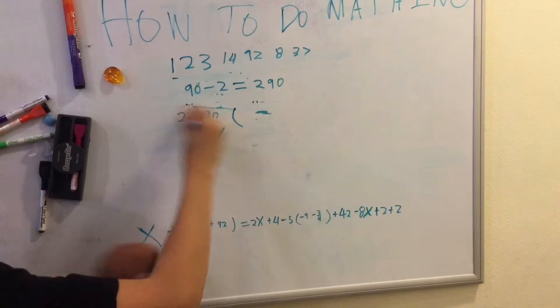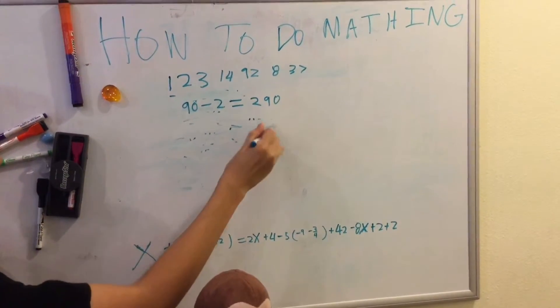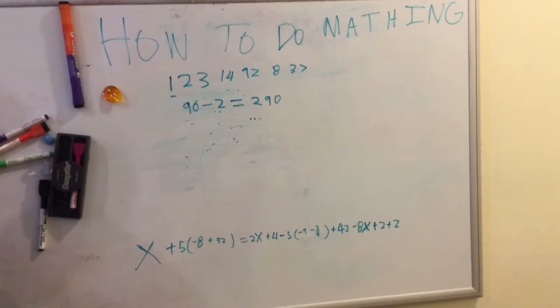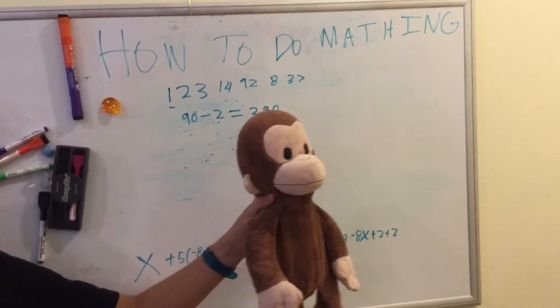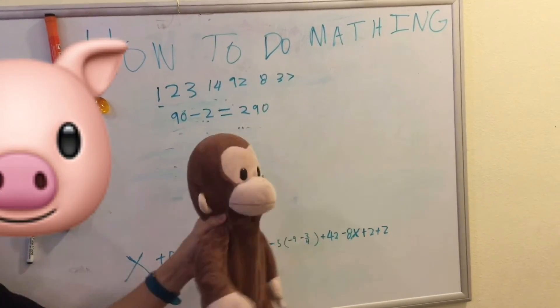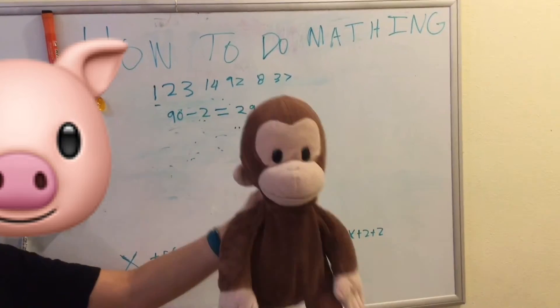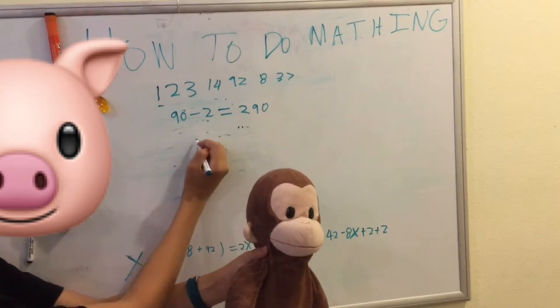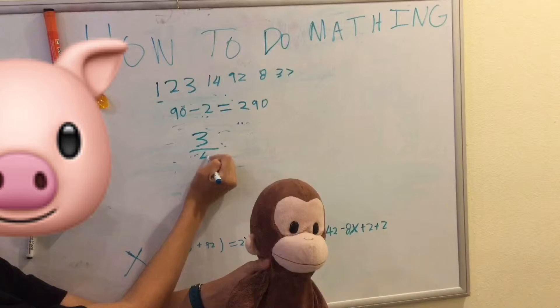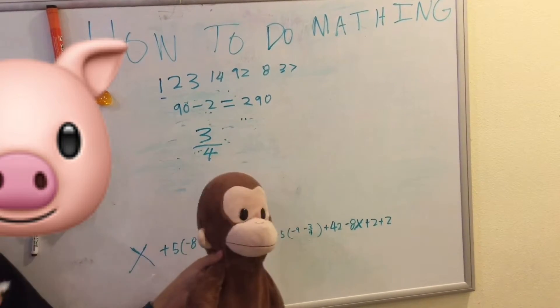Now, there's a weird type of number thingy called fracciones. That's how you say it in French. Yeah. When you're good at French, English, and math. Fraction. You put a line right here. That means dividing.